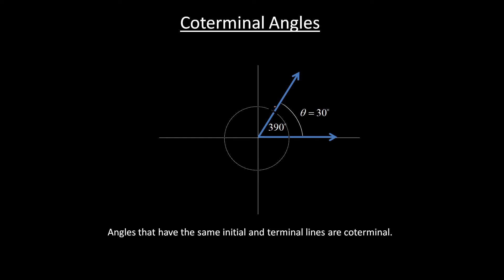And we can go around as many times as we want. So that was going around once. We could go around twice. So we could do 360, 720, and then another 30 is 750. 750 degrees is coterminal with 30 because it starts on the same initial and ends on the same terminal.